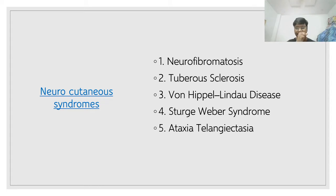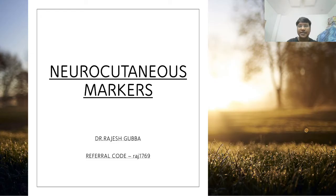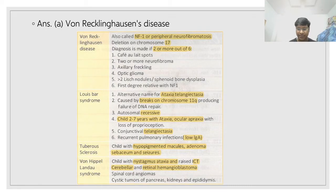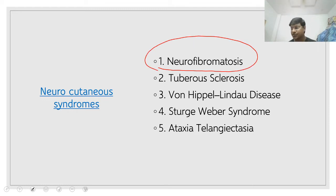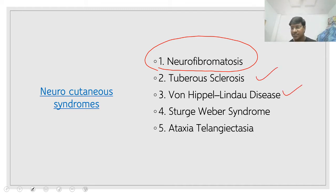These are your neurocutaneous syndromes: neurofibromatosis, tuberous sclerosis, Von Hippel-Lindau disease, Sturge-Weber syndrome, and ataxia telangiectasia. What I have finished in the first part is neurofibromatosis. Now in this particular session, I will discuss tuberous sclerosis and Von Hippel-Lindau disease.